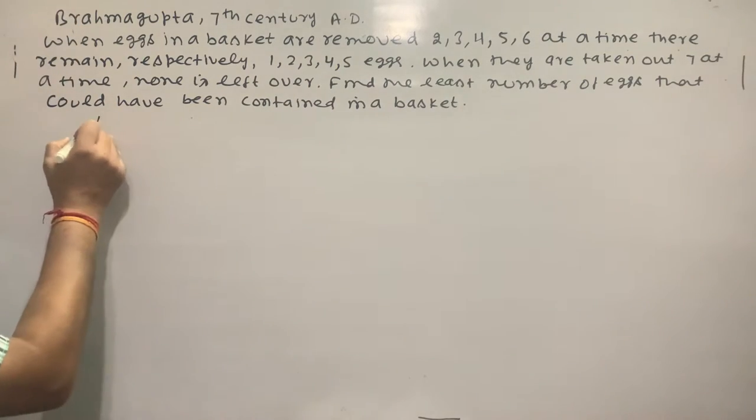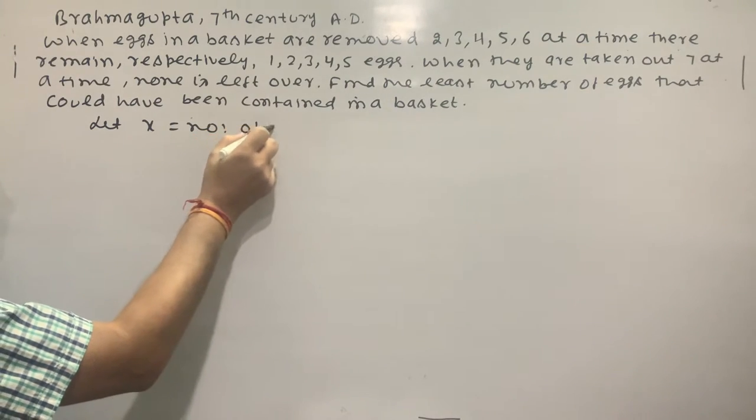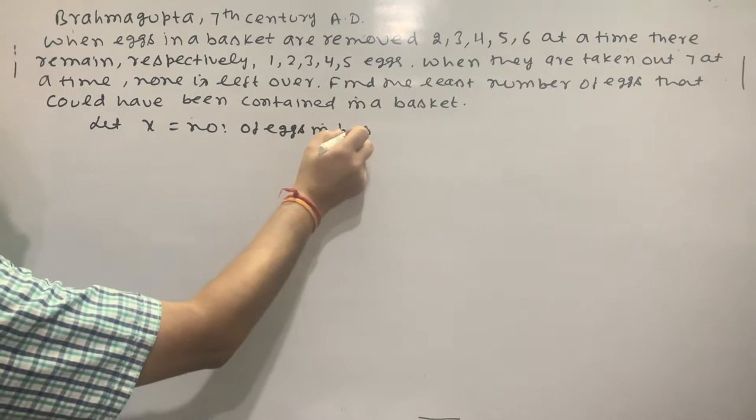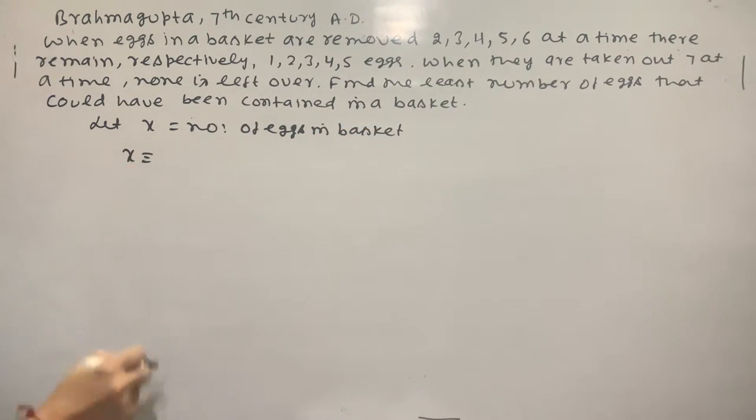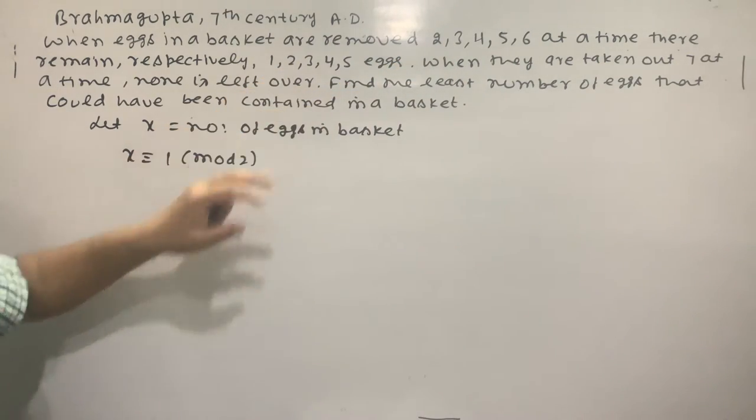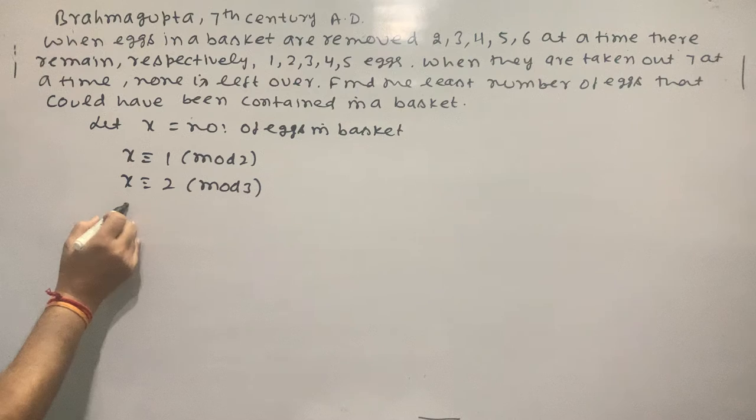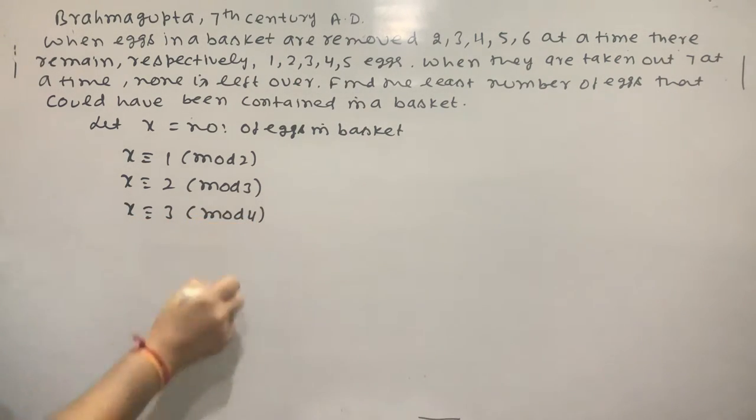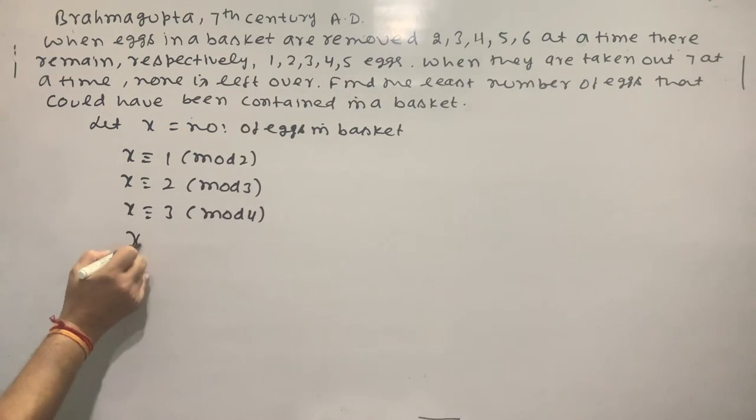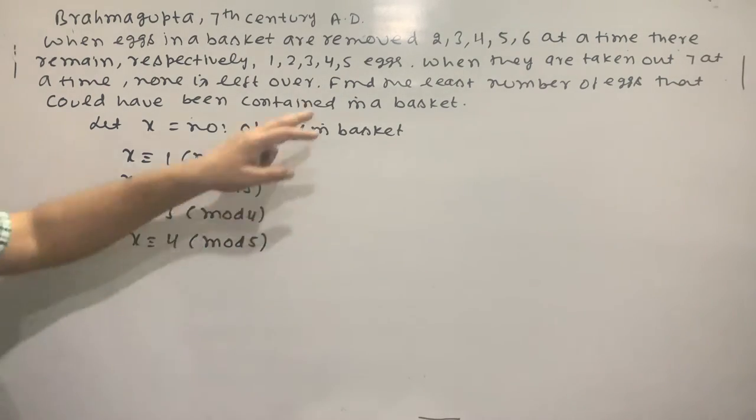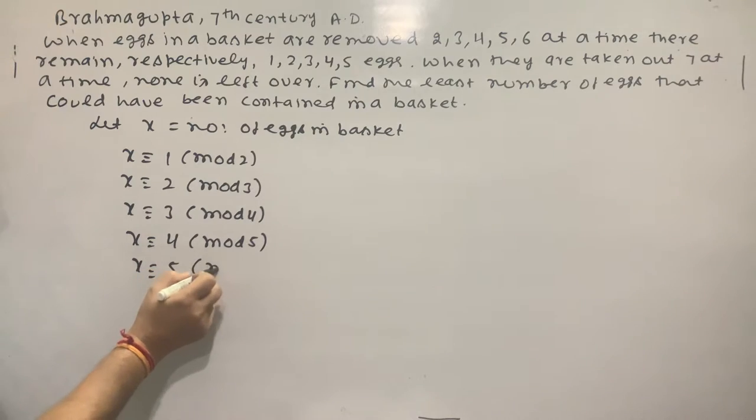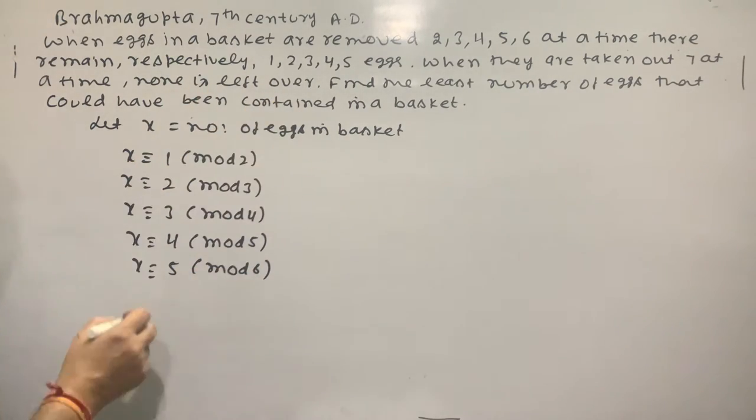Let x be the number of eggs in basket. x ≡ 1 (mod 2), in 2nd time 1 egg remaining, 3rd time 2 eggs remaining, 4 times 3 eggs remaining, 5 times 4 eggs remaining, 6 times 5 eggs remaining, 7th time 0 eggs.